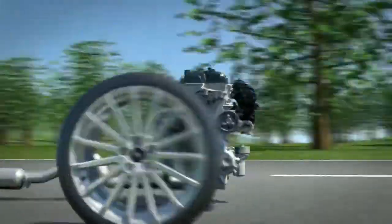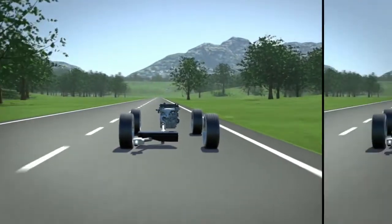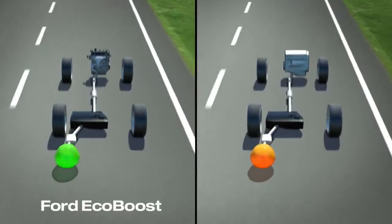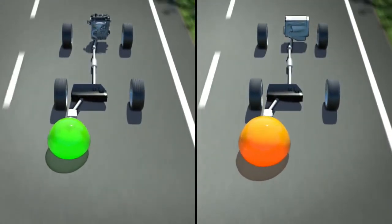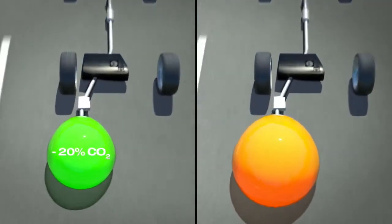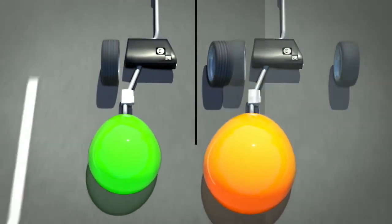What is the benefit for the environment? EcoBoost engines emit up to 20% less CO2 compared to conventional petrol engines and, as a matter of course, these innovative engines comply with the European Stage 5 regulations.